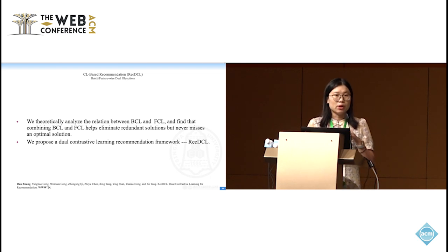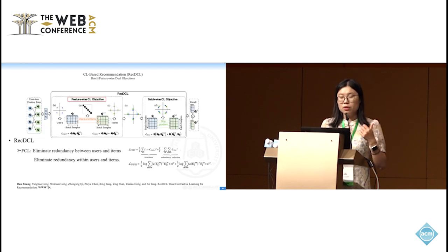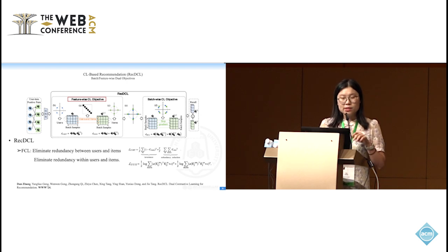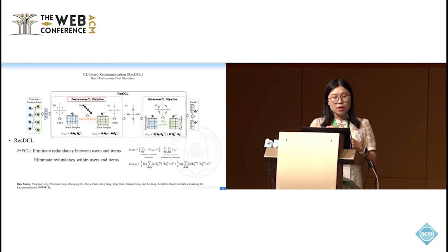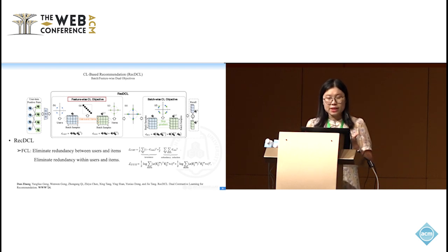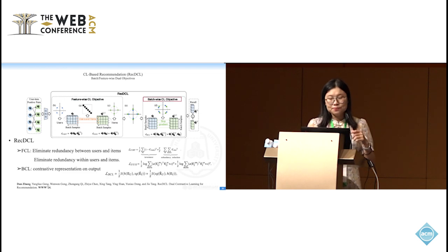Based on these findings, we propose a dual contrastive learning recommendation framework called RECDCL. This is the framework of our work. On one hand, RECDCL optimizes the feature-wise objective by eliminating the redundancy between users and items. We aim to maximize the element in the diagonal and minimize the off-diagonal element in this matrix, and then we eliminate the redundancy among users and items using the polynomial kernel. This is the loss for FCL objectives. On the other hand, as a batch-wise objective, we design a basic BCL and advanced BCL to enhance the output representation using distributable representation, and here is the batch-wise loss for these objectives.